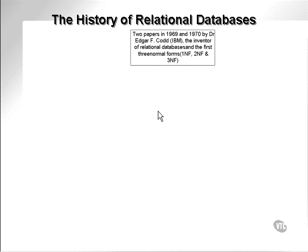The history of relational databases. As you can see from the diagram, Dr. Edgar F. Codd wrote a number of papers in the late 60s and early 70s describing what a relational database is and how it would work. He created the first three normal forms — normalization is something we will get into at a later stage. That was the genesis of the relational database. Fourth and fifth normal forms came along later as an addition to the original relational database theory.